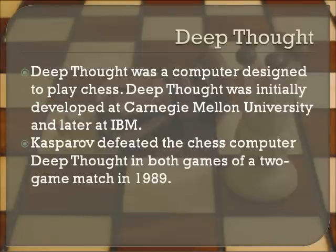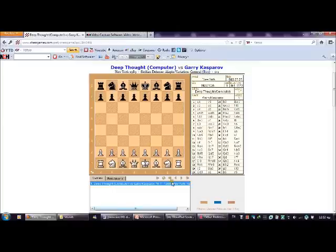Deep Thought was a computer designed to play chess, initially developed at Carnegie Mellon University and later at IBM. Kasparov defeated the chess computer Deep Thought in both games of a two-game match in 1989. Now you can see a game that Kasparov played versus Deep Thought.